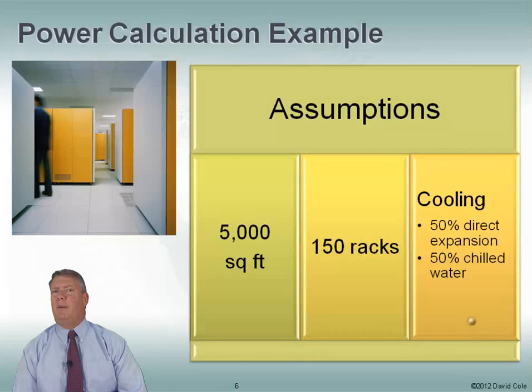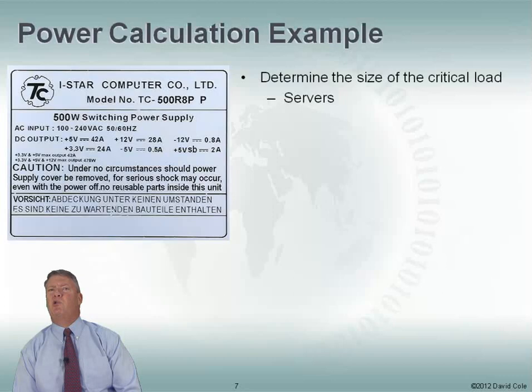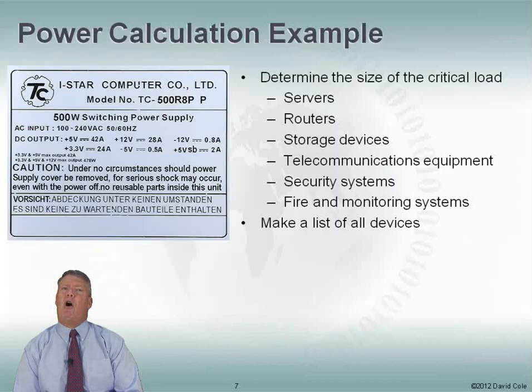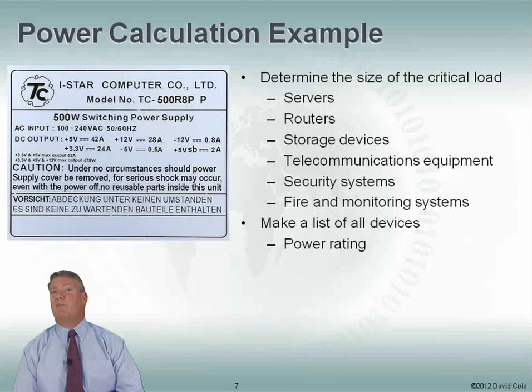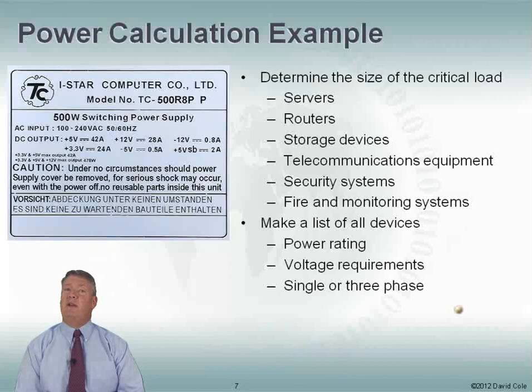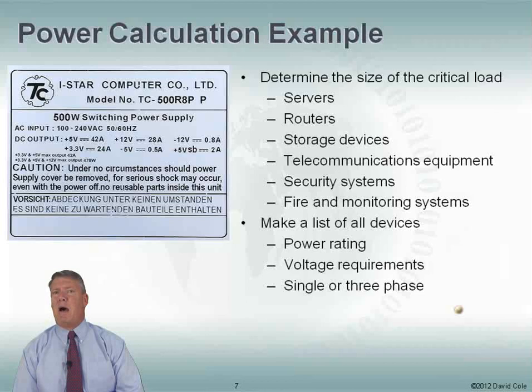First, we're going to start by determining the size of our critical load. What's in our critical load? Things like servers and routers, storage devices, telecommunications equipment, security, and fire monitoring — all of these are our critical load, the things we want to make sure are up all the time. We're going to make a list of all these devices, look at their power ratings — using manufacturer calculators rather than just nameplate values — and also their voltage requirements, including whether we need single or three phase power.